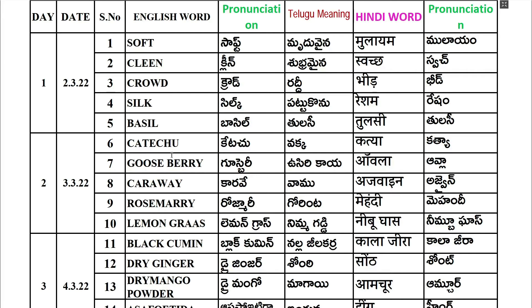3rd March. 6th one: Catechu. 7th one: Gooseberry. Telugu: Usirikaya. Hindi: Aavla. 8th one: Caraway, C-A-R-A-W-A-Y. Caraway.